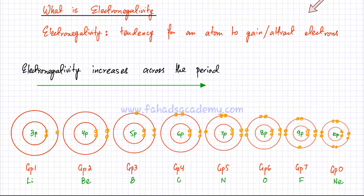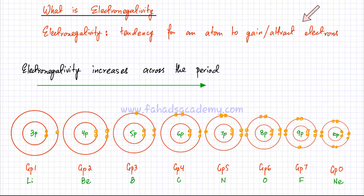Chlorine makes a minus 1 ion as well — it also has a tendency to gain electrons. Whereas metals on the left-hand side of the periodic table, group 1, 2, etc., they have a tendency to lose electrons. So I'm going to discuss why the elements on the right side have a higher tendency to gain electrons and elements on the left-hand side have a higher tendency to lose electrons.